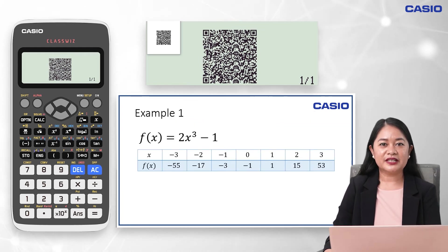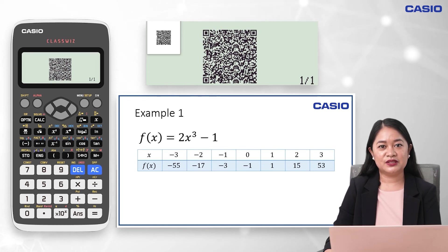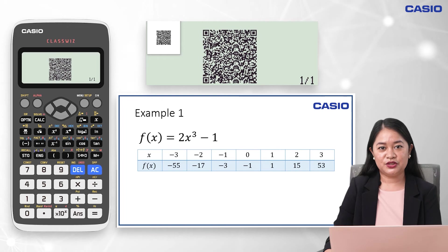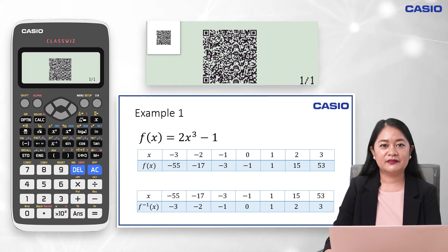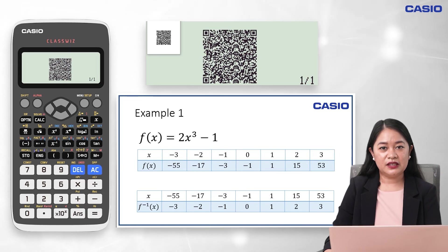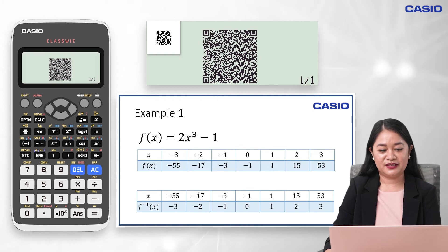To clearly understand: given the table of values for the given function, we interchange the domain and the range. This will lead us to the table of values of its corresponding inverse function.